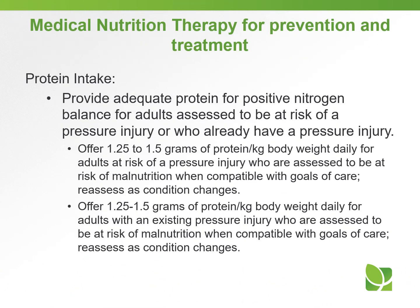Protein intake: provide adequate protein for positive nitrogen balance for adults assessed to be at risk of a pressure injury or who already have a pressure injury. Offer 1.25 to 1.5 grams of protein per kilogram body weight daily for adults at risk of pressure injury who are assessed to be at risk of malnutrition when compatible with goals of care. Reassess as condition changes. This same recommendation applies to adults with an existing pressure injury who are assessed to be at risk of malnutrition.